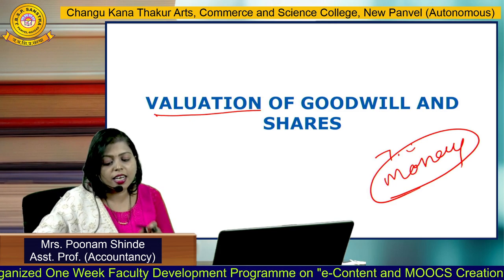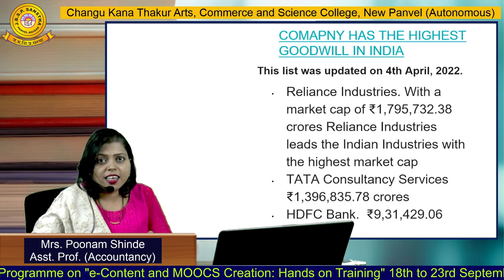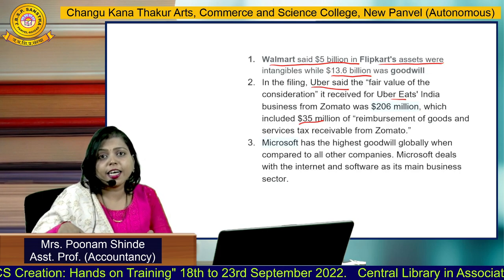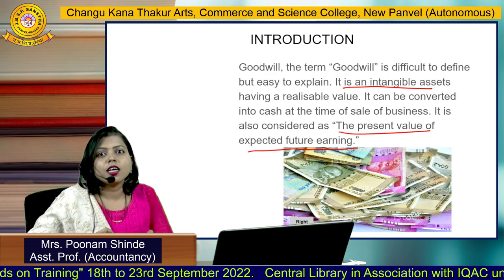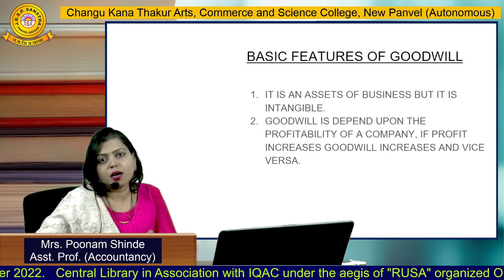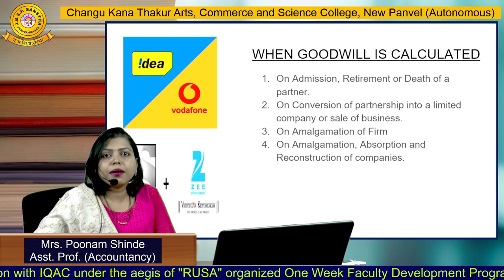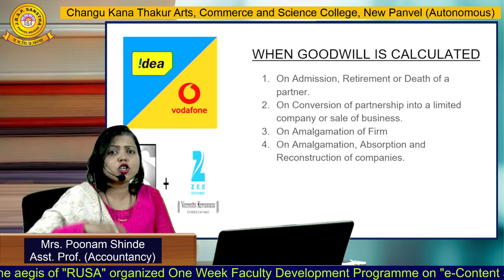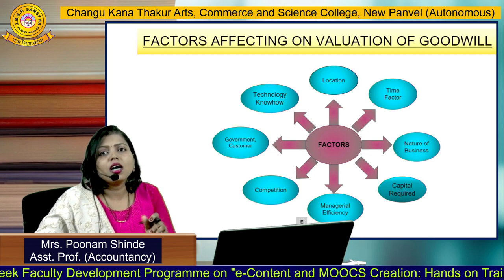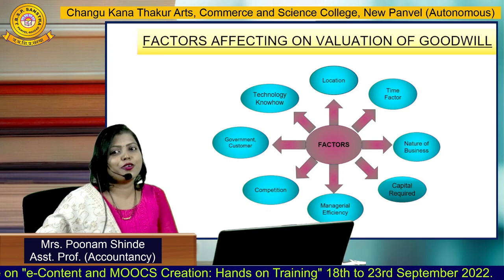To recap: the highest goodwill companies in India were listed, then Walmart's example showed they paid 70% of the acquisition price for goodwill alone when buying Flipkart. Goodwill is an intangible asset and depends on profitability — if profit falls, goodwill falls. Goodwill is calculated only on admission, retirement, death of a partner, or in cases of amalgamation, absorption, and reconstruction. Thank you very much — if time permits, we will discuss the eight stages of valuation of goodwill.